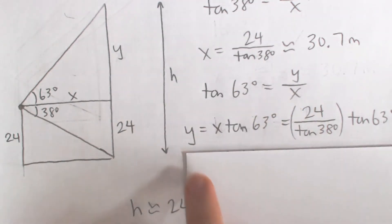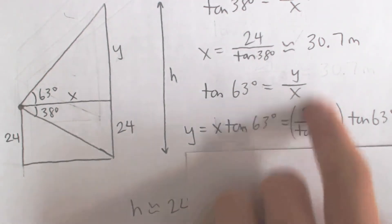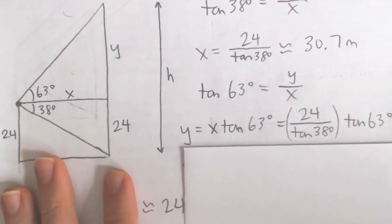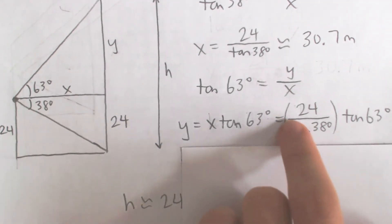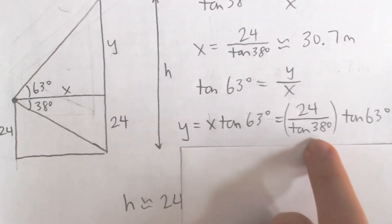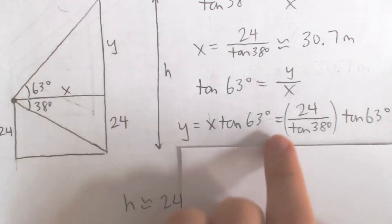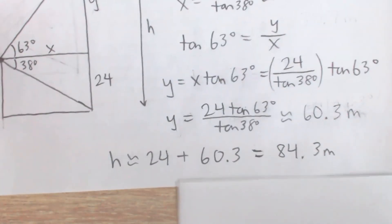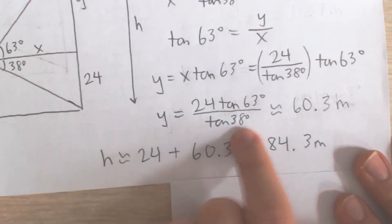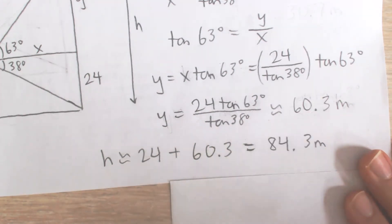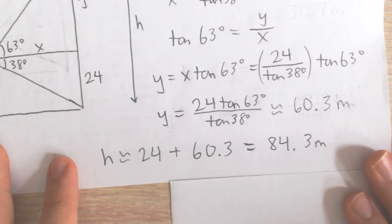What is x? I could use the rounded value, but I want a little bit more precision, so I'm going to use the exact value, which is 24 over tangent 38. All I did was substitute that in for x, and so now I have an expression for y, which is 24 times tangent 63 divided by tangent 38. Calculating that using my calculator, that's about 60.3 meters.